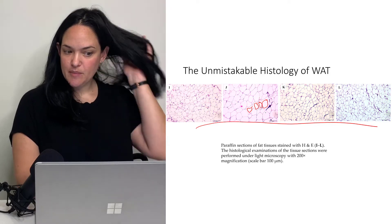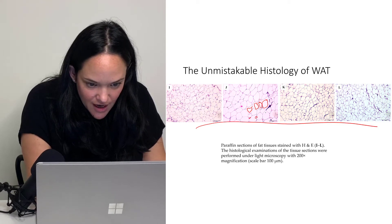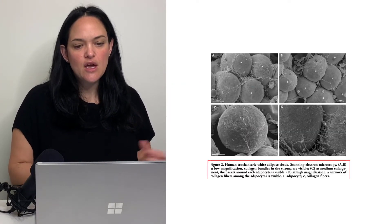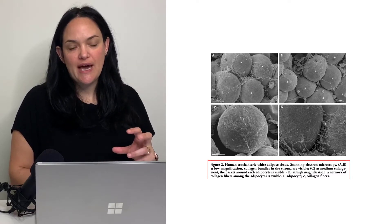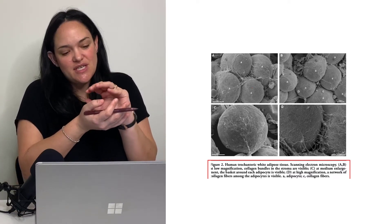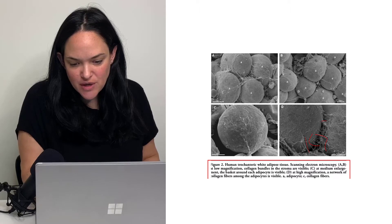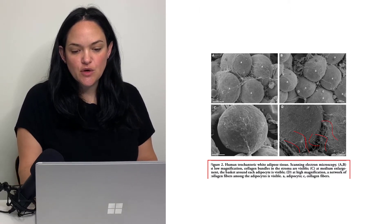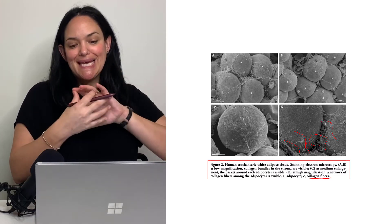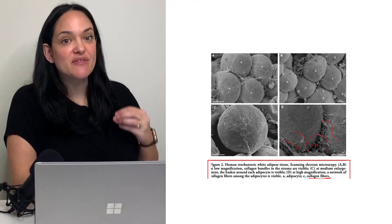You'll also notice with white adipose tissue that there are nuclei, but they're tiny and pushed to the periphery of the cell because of that large central lipid vacuole. Under an electron microscope, these adipocytes look like spheres due to the lipid stored inside. You'll also notice stringy collagen fibers on the slides, which link and hold the adipocytes together. As a side note, adipose tissue is a type of loose connective tissue.